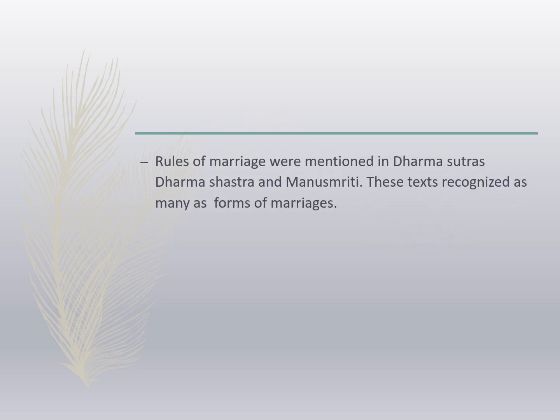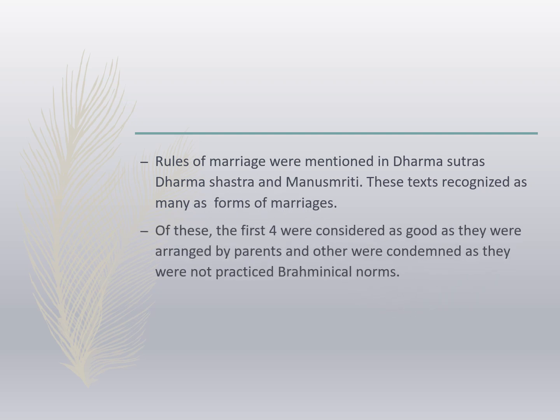Rules of marriage were mentioned in Dharmasutra, Dharmashastra, and Manusmriti. The texts recognized as many as eight forms of marriages. Of these, the first four were considered good as they were arranged by parents. The others were condemned as they did not follow brahmanical norms.